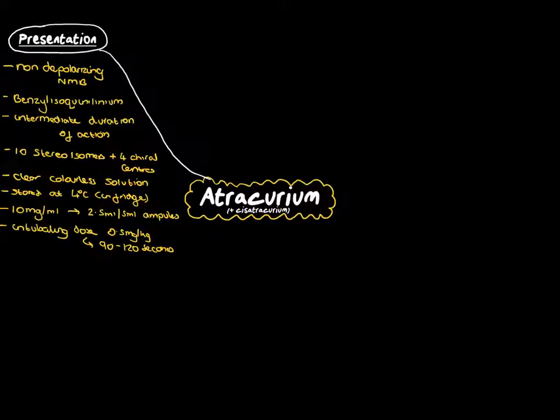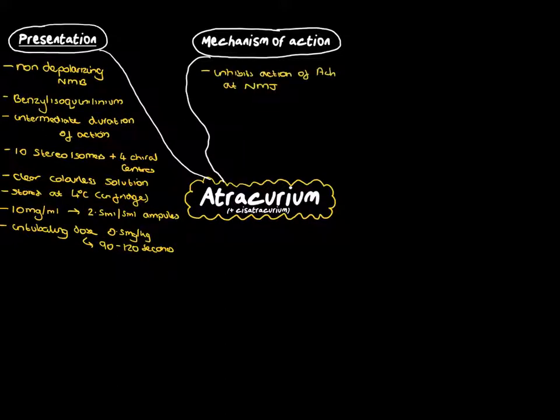When we think about the mechanism of action of atracurium, it works by inhibiting the actions of acetylcholine at the neuromuscular junction. It competitively binds the alpha subunit of the nicotinic acetylcholine receptor on the postjunctional membrane, and therefore blocks the actions of acetylcholine.